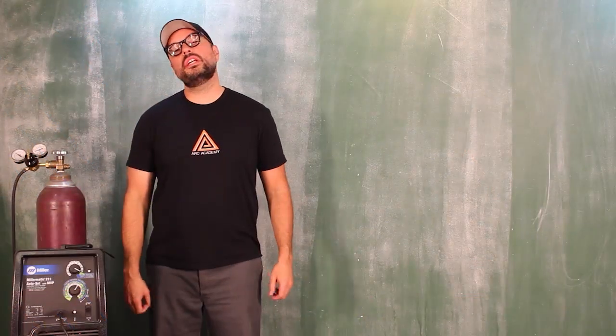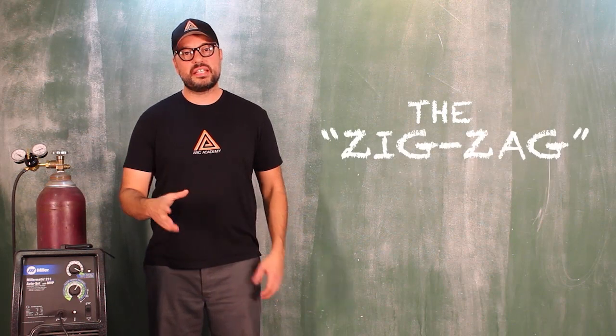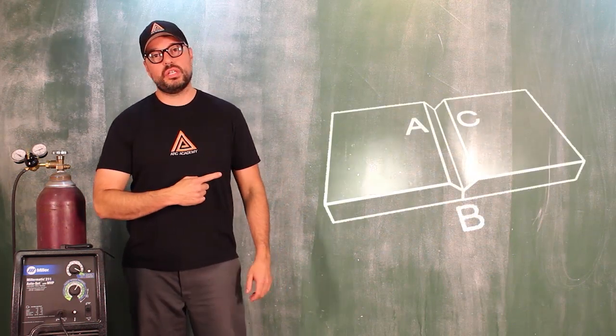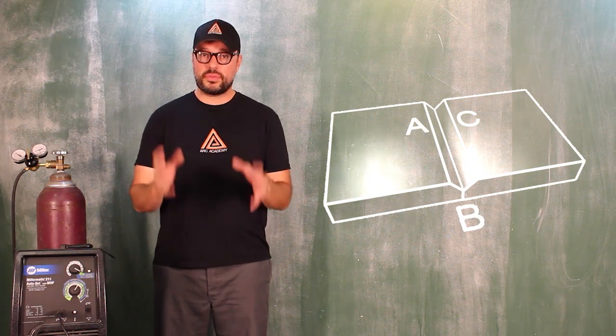The first arc motion technique that we're going to get into is the zigzag. Now what we're going to do is we are going to take our V-chamfered butt joints and we are going to tack them in three places at the top, the bottom, and the middle.